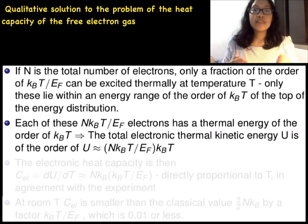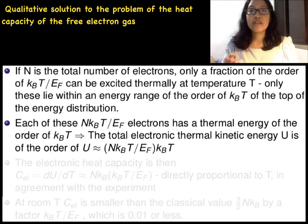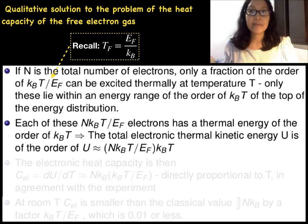The qualitative solution to the problem of the heat capacity of the electron gas is the following. If big N is the number of electrons, only a fraction of the order of T/TF can be excited thermally when the specimen is heated to temperature T. Because only this fraction lies within an energy range of the order of kBT of the top of the energy distribution.